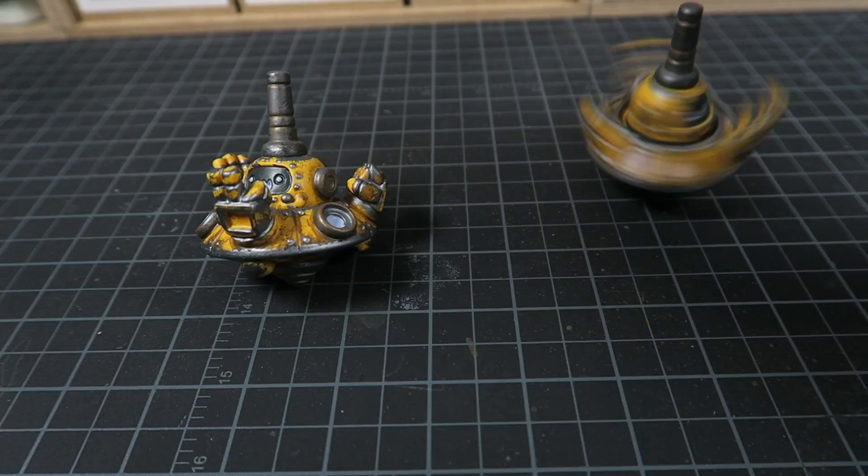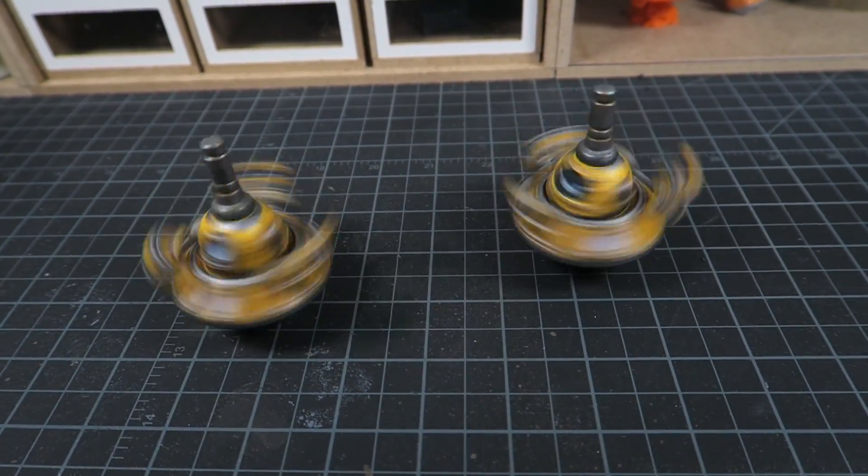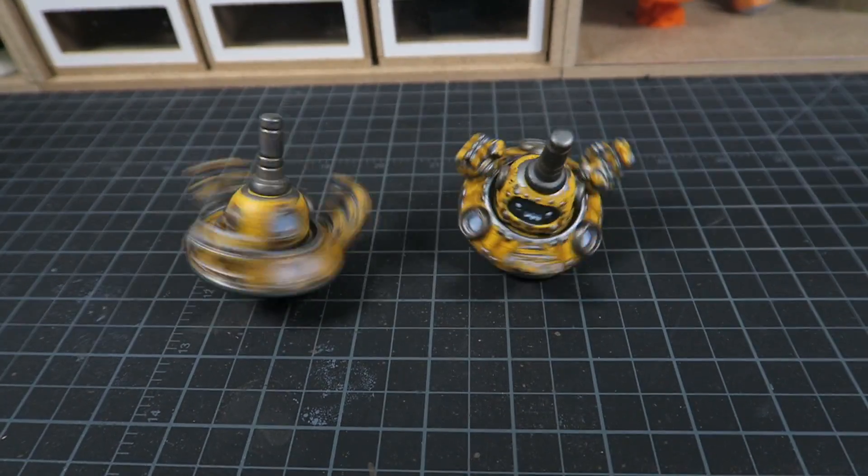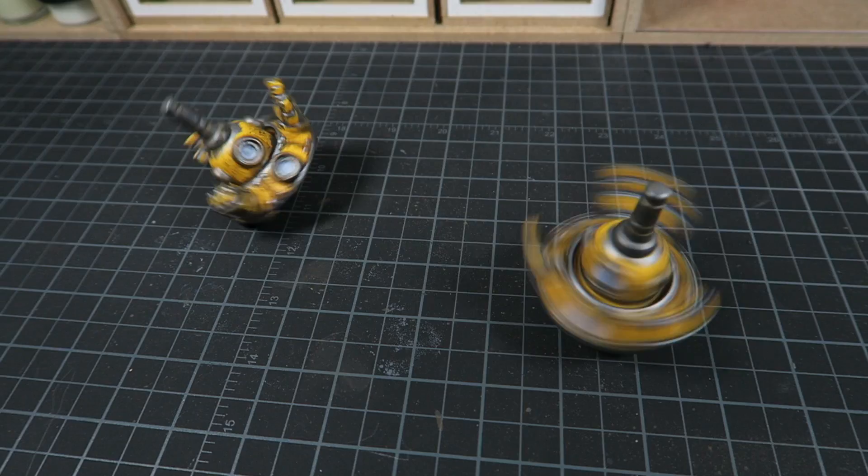Now some of you have probably been wondering what is a rock, paper, scissors spin top anyway. Well you spin the top and once it stops whichever hand is raised is the top's move. You can play against the top or if you have two a friend can play against you.